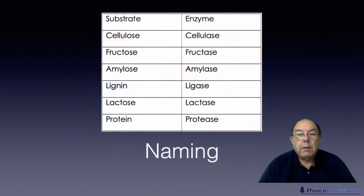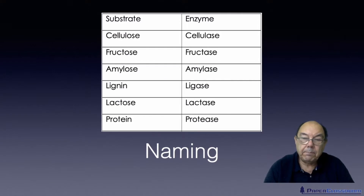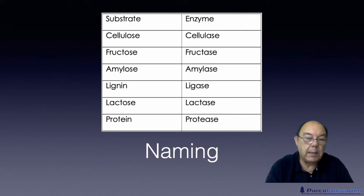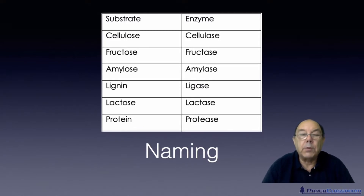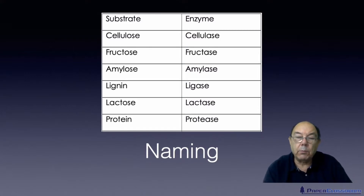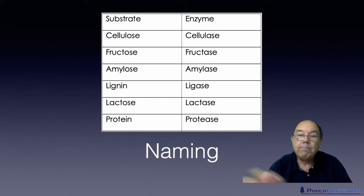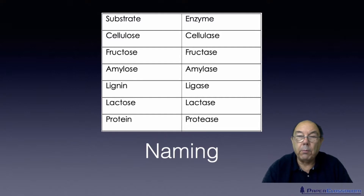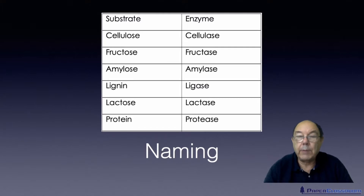Just a final note on naming. All enzymes have a special EC name, which is a set of four numbers. EC stands for the Enzyme Commission, who have come up with a way of naming enzymes by numbers. The first number is the type of reaction the enzyme undergoes. The second number is a subcategory of that reaction. The third number is a subcategory of the subcategory. The fourth number is just an index number — so the very first reaction of that type is 1, the next is 2, and so on.